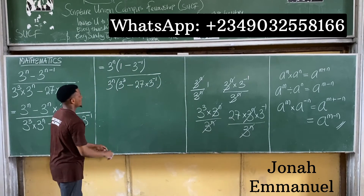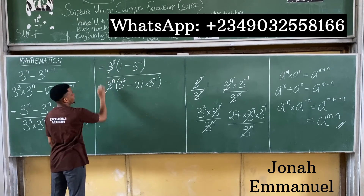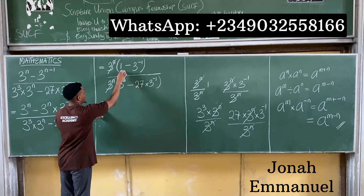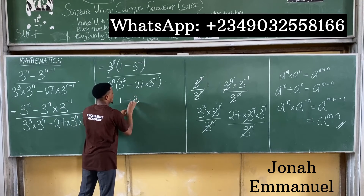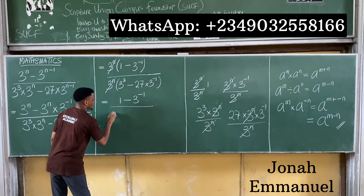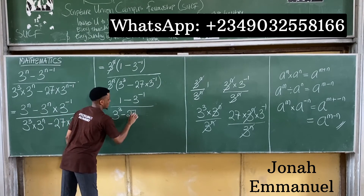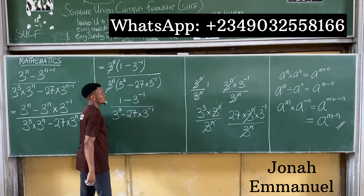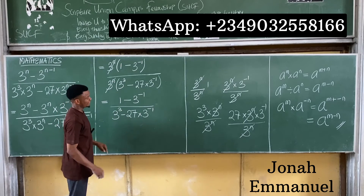Now the 3 to the power n in the numerator and denominator cancel each other out. We are left with the numerator 1 minus 3 to the power minus 1, all over the denominator 3 to the power 3 minus 27 times 3 to the power minus 1.